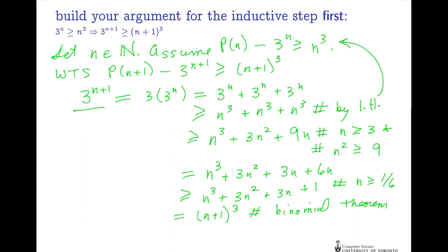We've shown that if P(n) is true, then 3 to the n+1 is greater than or equal to (n+1) cubed, as long as n is at least 3. So we have to fix the beginning of our claim a little bit, and now we've shown that for every natural number that's at least 3, P(n) implies P(n+1).